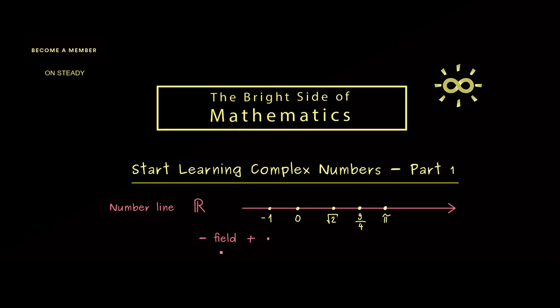Then we also have an ordering so we can compare two numbers, and this ordering also satisfies some rules. Finally, the last property is the completeness which tells us that there are no holes on this number line.